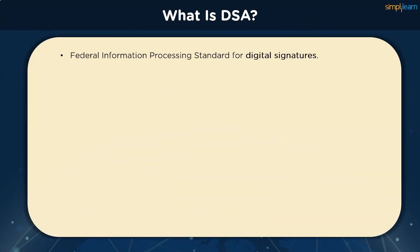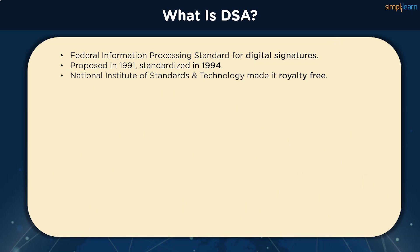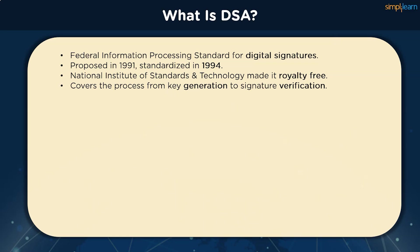The digital signature algorithm is a FIPS standard, which is a Federal Information Processing Standard for digital signatures. It was proposed in 1991 and globally standardized in 1994 by the National Institute of Standards and Technology, also known as NIST. It functions on the framework of modular exponentiation and discrete logarithmic problems, which are difficult to compute as a brute-force system. Most signature types are generated by signing a message digest with the private key of the originator, creating a digital thumbprint of the data. Since just the message digest is signed, the signature is generally much smaller compared to the data that was signed, imposing less load on processors and using small volumes of bandwidth.